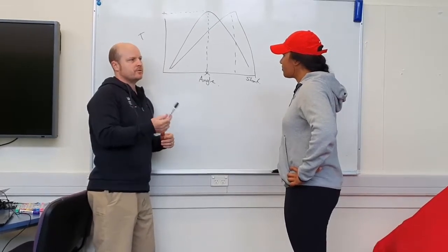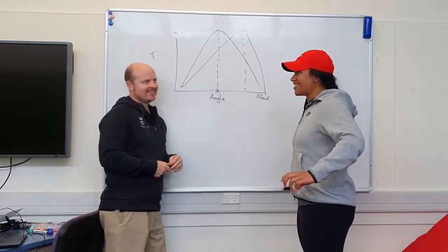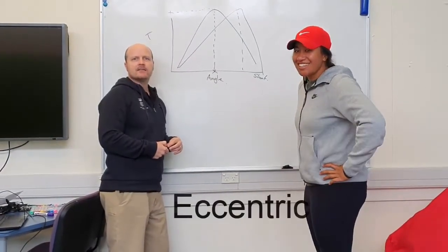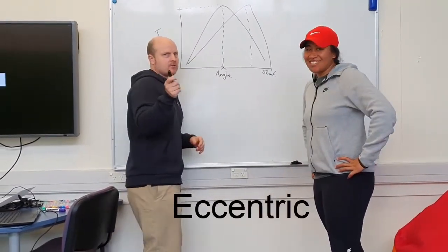What type of strengthening? Eccentric exercises. Eccentric strengthening. So when we do eccentric strengthening, there's tension through the muscle and then the muscle lengthens.